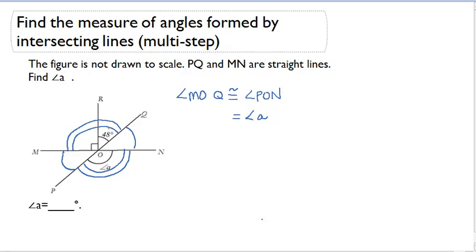We know that the measure here of ROQ is 48 degrees, and the measure here of MOR is 90 degrees. So the sum of these two angle measurements gives us angle MOQ. So I'm going to write that down, 90 degrees plus 48 degrees.